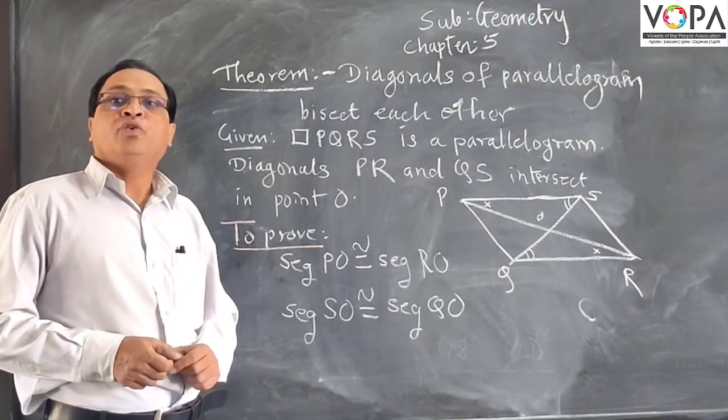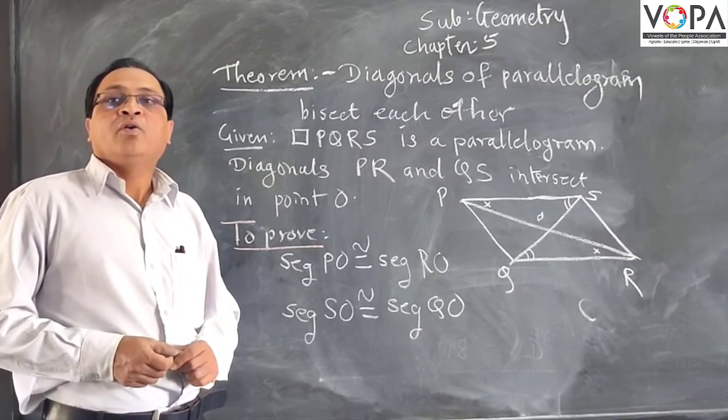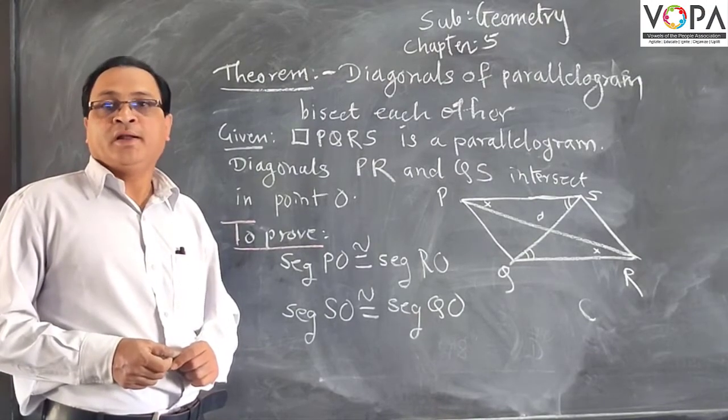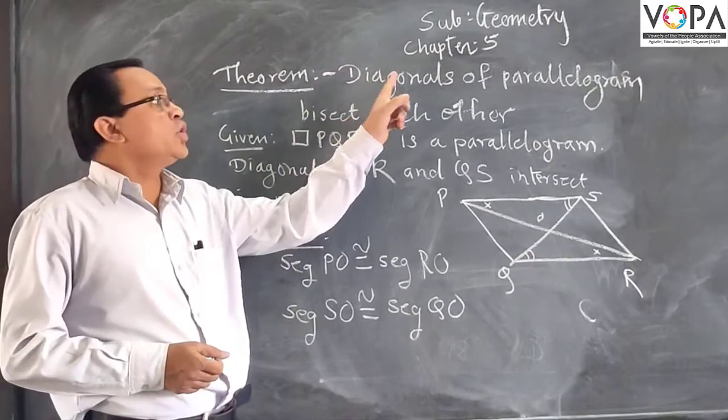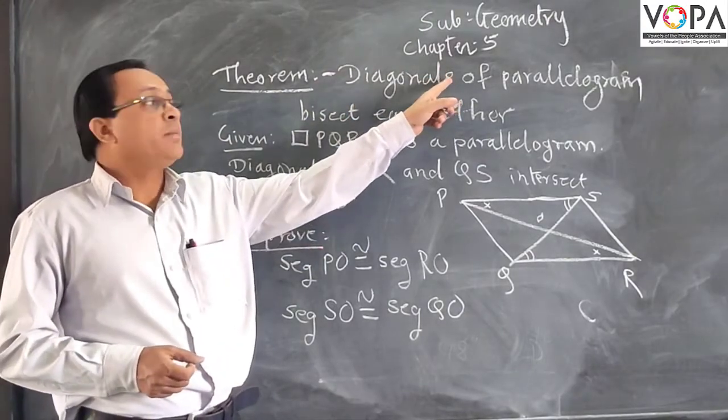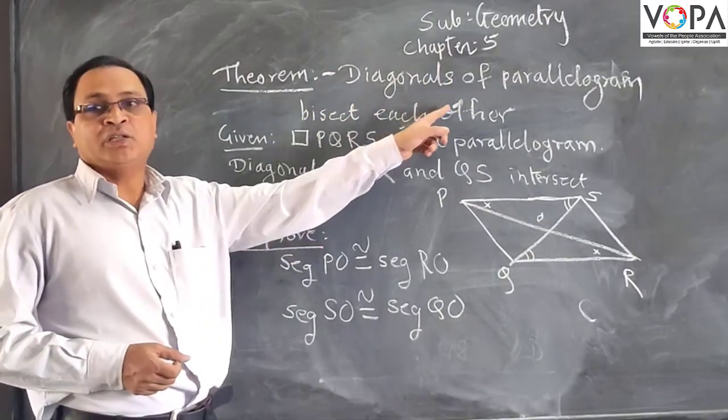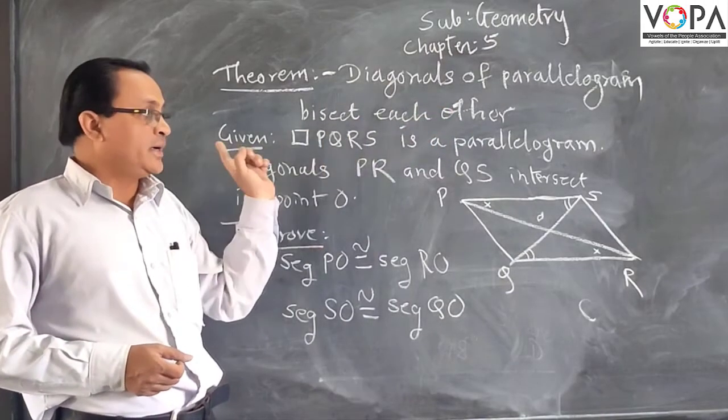Dear students, now we will see one theorem from chapter number 5, Quadrilaterals. The statement of the theorem is, diagonals of a parallelogram bisect each other. Let us draw the diagram first.